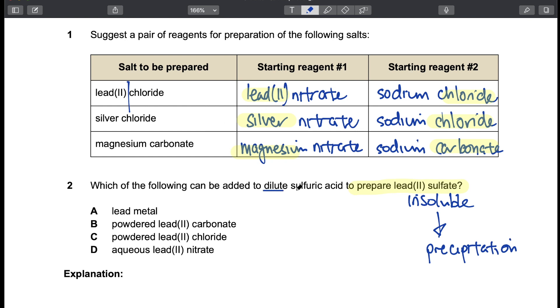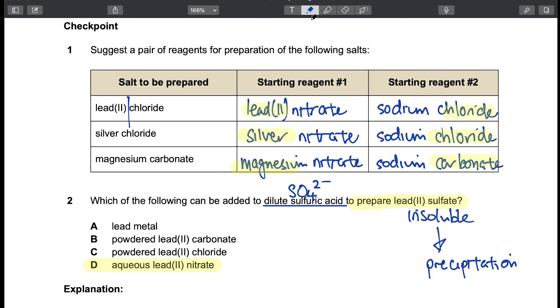So this is aqueous solution number one, it contains sulfate. Aqueous solution number two must contain lead(II) ions. And we have to choose nitrates because all nitrates are soluble. So that's all we have for this segment of precipitation. Thank you all for watching.